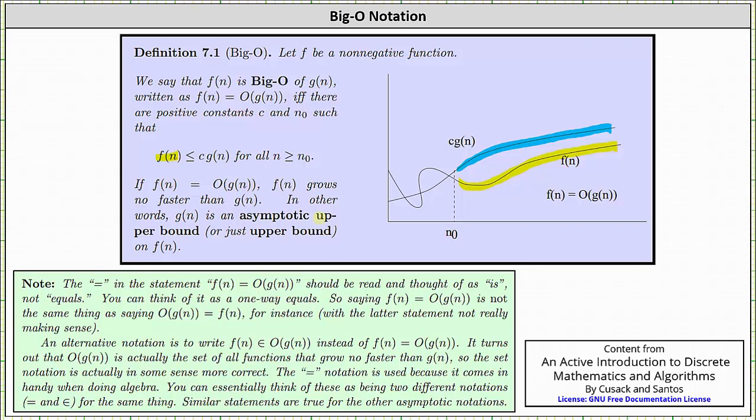The equals in the statement f(n) equals Big-O of g(n) should be read and thought of as is, not equals. You can think of it as a one-way equals. So saying f(n) is Big-O of g(n) is not the same thing as saying Big-O of g(n) is f(n), for instance, with the latter statement not really making any sense.